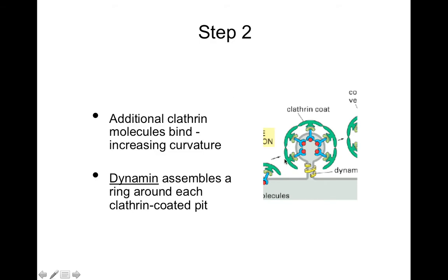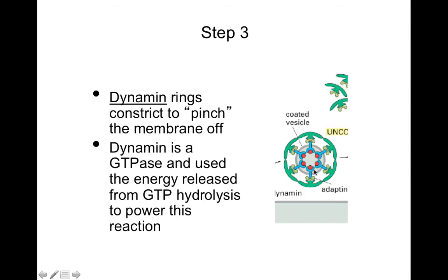Now this vesicle needs to be pinched off. There's a protein called dynamin that assembles a ring around each clathrin-coated pit or vesicle, and this ring constricts to pinch the membrane off. Dynamin is a GTPase and uses the energy released from GTP hydrolysis to power this reaction. Therefore, the pinching off of vesicles is an energy-dependent process.